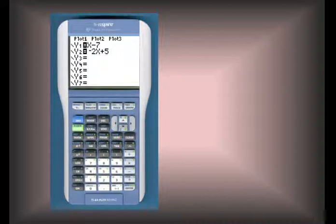The first thing we need to do is put in both of our equations into the calculator. We'll start with the first equation, y equals x minus 7, and we'll go to the key Y=. We should get a screen that looks like this.